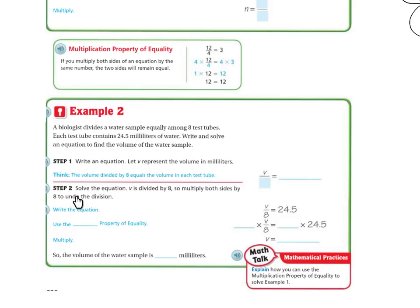Write an equation to represent the volume in milliliters. We're going to have our V. V is divided by eight. Let's solve the equation. V is divided by eight, so we're going to multiply both sides by eight to undo. So V divided by eight equals 24.5 milliliters.